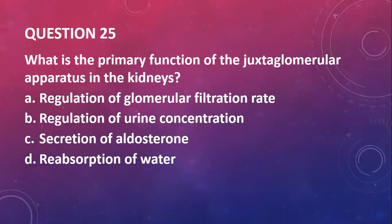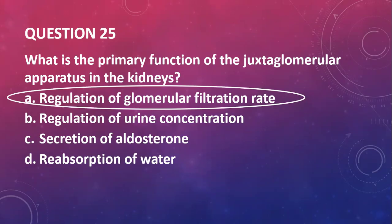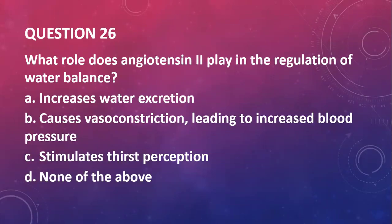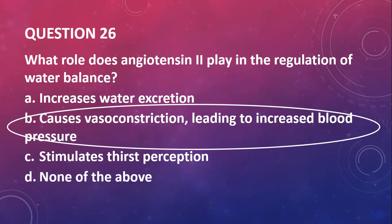Question twenty-three: what is the primary function of the renin-angiotensin-aldosterone system in maintaining water balance? It's a complex system and what it does is increase water reabsorption in the kidneys. Question twenty-four: which hormone is released in response to decreased blood volume or pressure, leading to increased water reabsorption and vasoconstriction? We're talking about a hormone. That will be renin. Question twenty-five: what is the primary function of the juxtaglomerular apparatus in the kidneys? The answer is regulation of glomerular filtration rate.